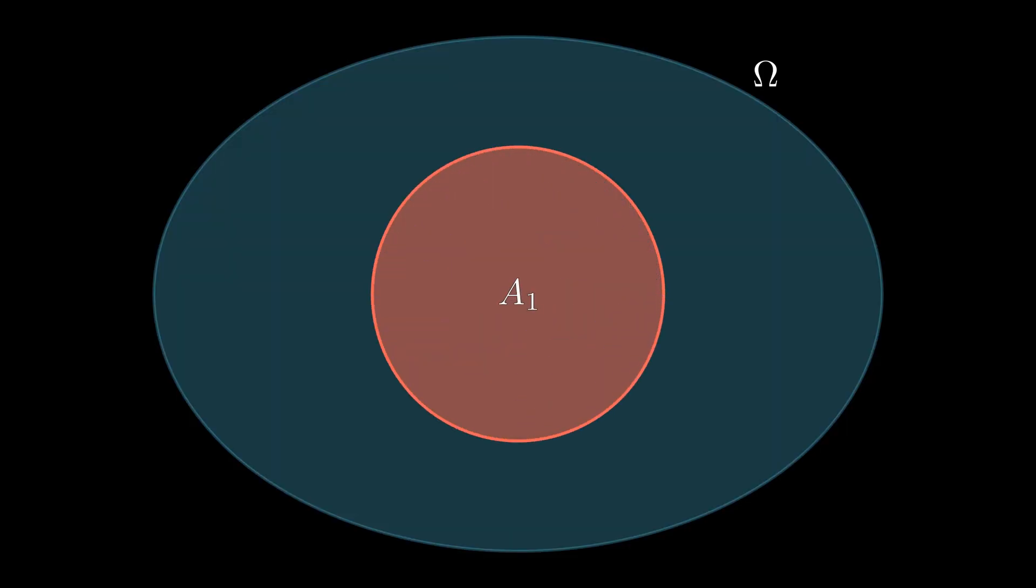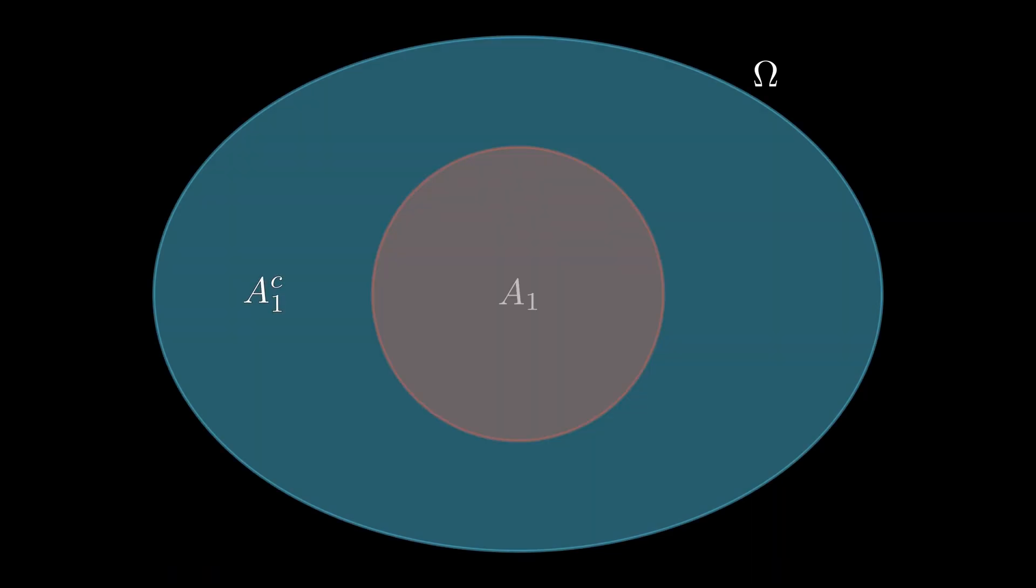So the first thing we have to consider is the concept of a set. A set could be anything, a collection of numbers, or that blue blob over there. A subset within a set, here it's A1, is a little element within that set. And its complement, written as a C, is everything but A1.